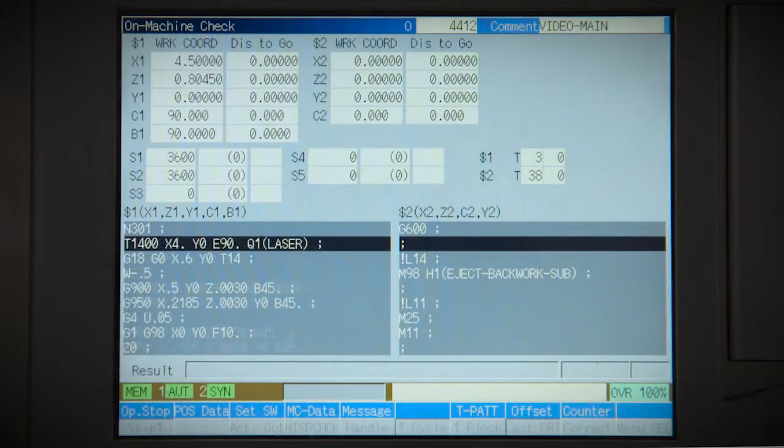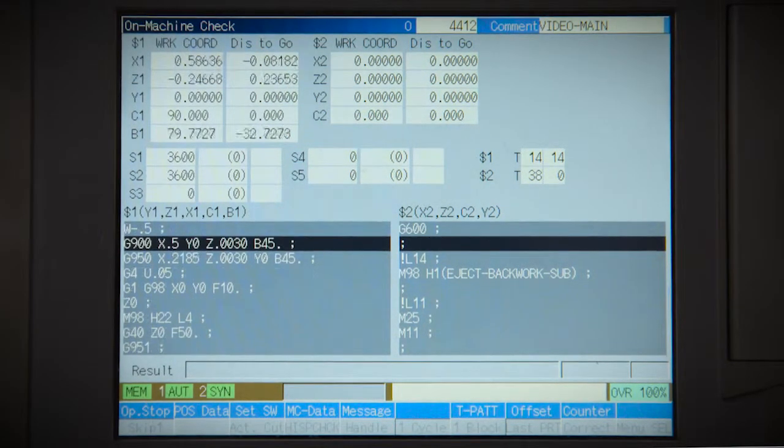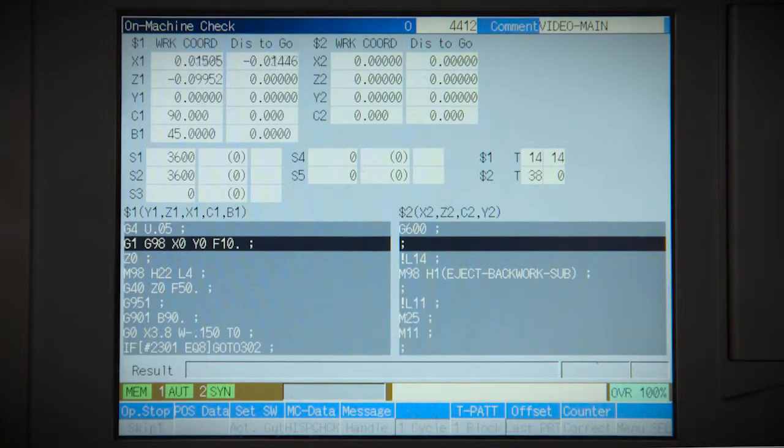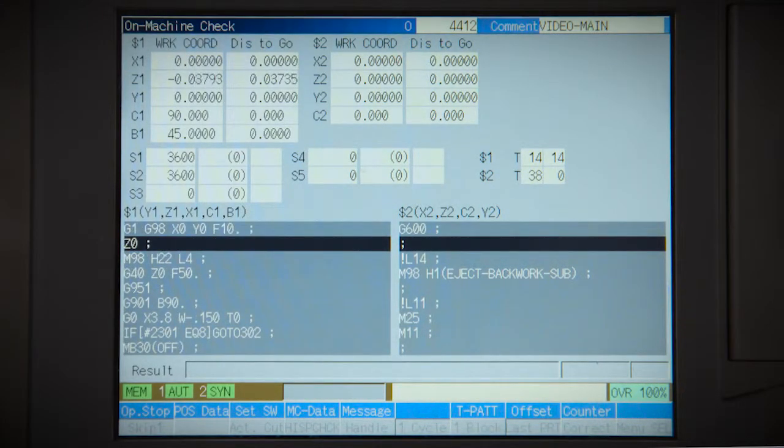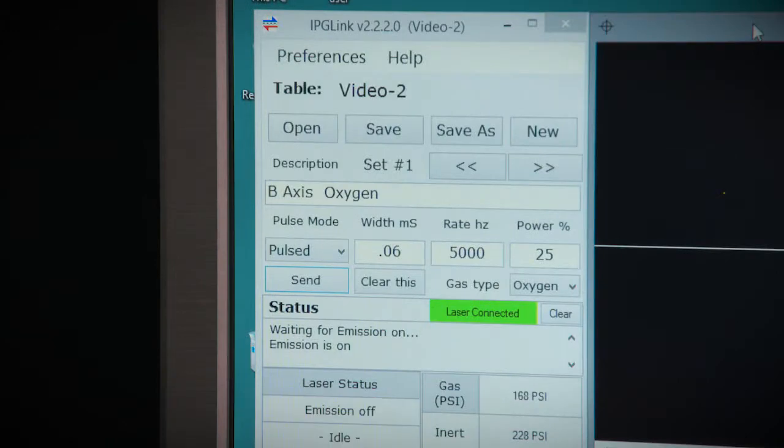The L2000 is completely interfaced to the Syncom control. Cutting path and offsets are fully controlled and edited in the machine control. Laser power and gas type can be selected from the part program.